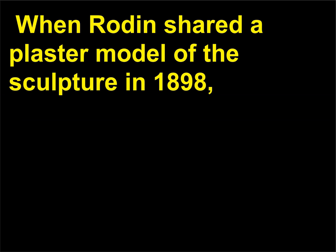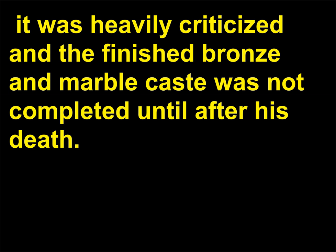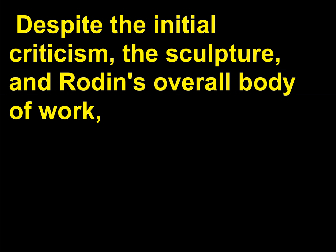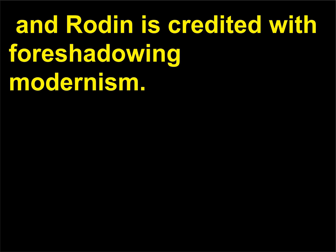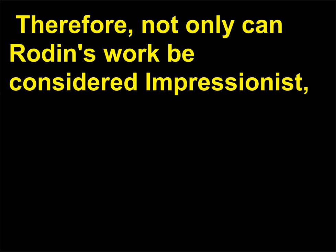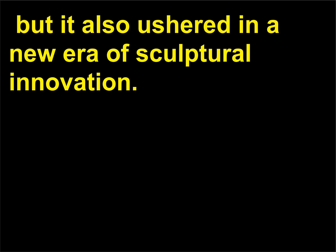When Rodin shared a plaster model of the sculpture in 1898, it was heavily criticized, and the finished bronze and marble cast was not completed until after his death. Despite the initial criticism, the sculpture and Rodin's overall body of work is considered to be among the most innovative and significant examples of 19th-century sculpture, and Rodin is credited with foreshadowing modernism. Therefore, not only can Rodin's work be considered Impressionist, but it also ushered in a new era of sculptural innovation.